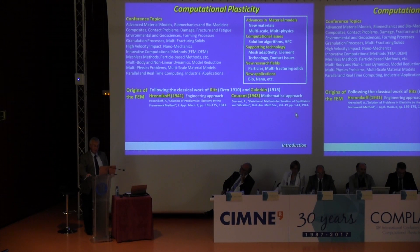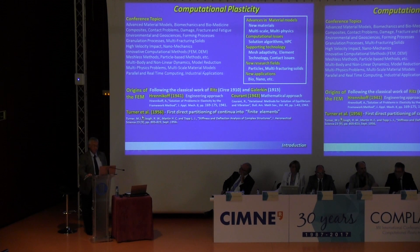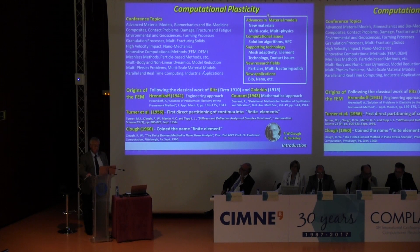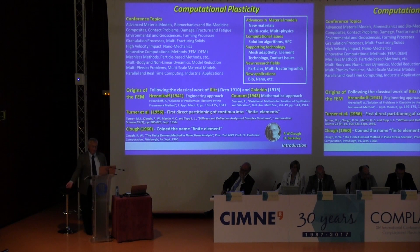Very little happened for the next decade, largely because of the absence of computing power. Then in 1956 we have the first recognizable finite element paper — the famous paper of Turner, Clough, Martin, and Topp. It was only four years later that the word 'finite element' was first used, coined by Ray Clough in a conference paper in 1960. By this stage, linear finite element methods were well established before moving on to nonlinear problems.